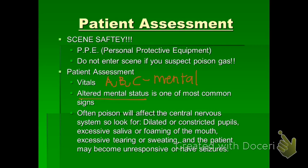Poison most often affects the central nervous system. Look at the patient's pupils — are they equal and reactive to light? Watch for excessive saliva or foaming from the mouth, excessive tearing, and potential unresponsiveness. If oxygen isn't getting to the brain, the patient can suffer seizures. There are four routes of exposure: ingestion, inhalation, absorption, and injection.